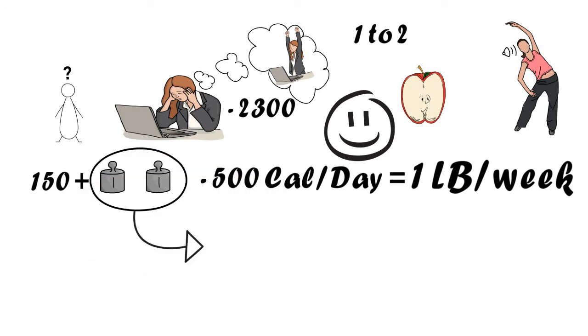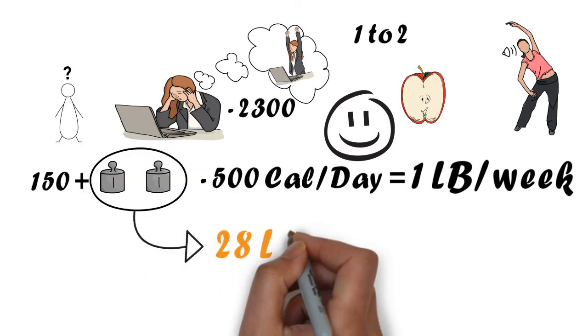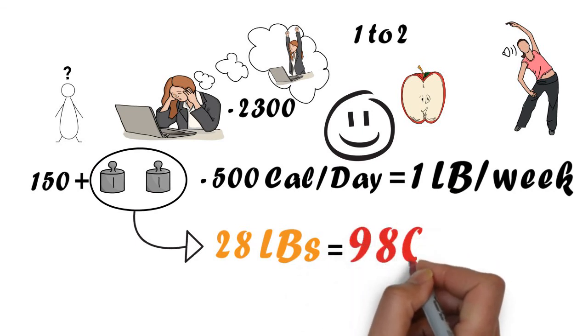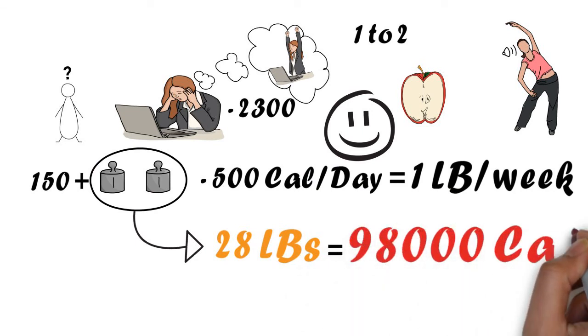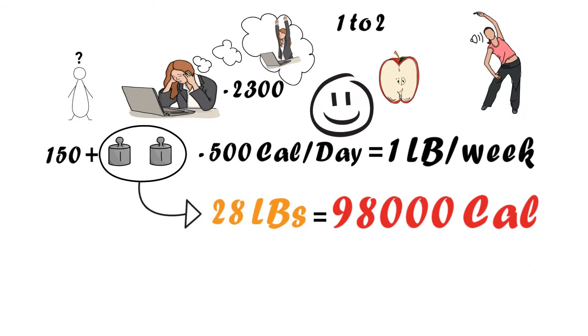Well our 2 stone is equivalent to 28 pounds. And as we know 3,500 calories is every pound of fat we have on our body. Our 2 stone equates to 98,000 calories in total.